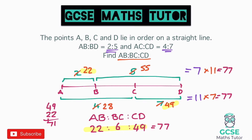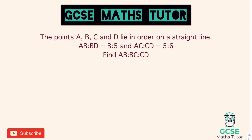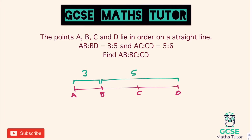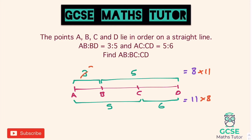Here's your last question — pause the video and have a go. A, B, C and D lie on a straight line. A to B and B to D is in the ratio 3 to 5; A to C and C to D is in the ratio 5 to 6. The totals are: 3 plus 5 equals 8, and 5 plus 6 equals 11. The lowest common multiple of 8 and 11 is 88. Times the top numbers by 11: 3 becomes 33 and 5 becomes 55. Times the bottom numbers by 8: 5 becomes 40 and 6 becomes 48.